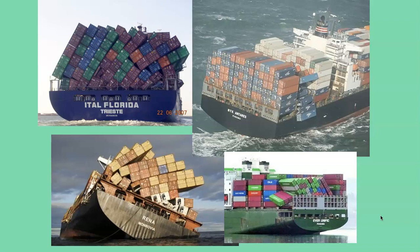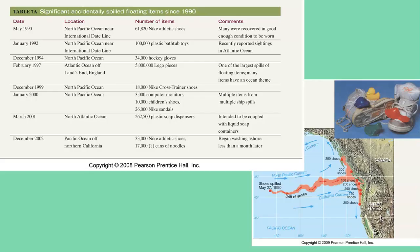In some cases, we have accidental float meters. One very common source, unfortunately, is container ships that have accidents and lose containers overboard. This is a summary of significant accidents that spilled floating items since 1990. Items lost include athletic shoes, plastic bathtub toys, hockey gloves, 5 million Lego pieces, Nike cross trainers, computer monitors, Nike sandals, plastic soap dispensers, and Nike athletic shoes — Nike really has had a lot of problems out there.